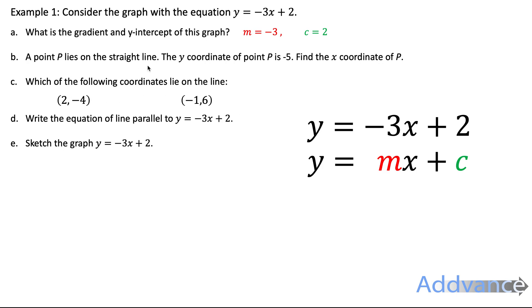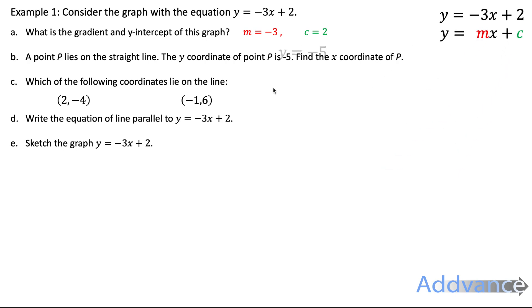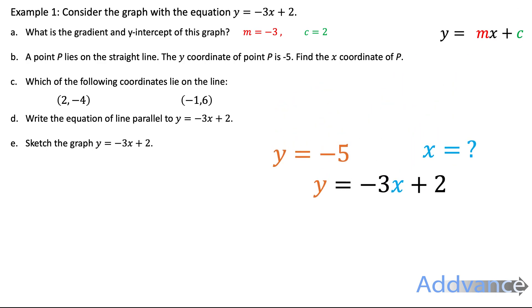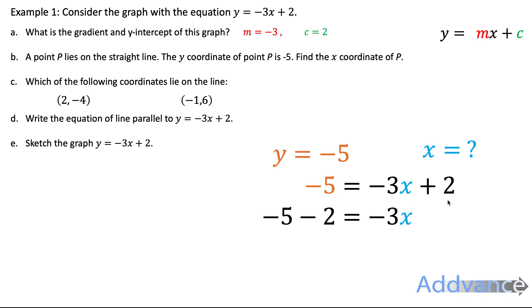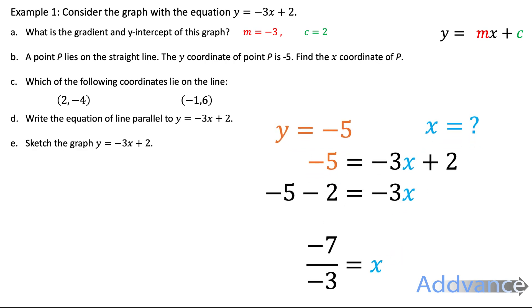A point P lies on the straight line; the y-coordinate of P is minus 5 — find the x-coordinate. We know y is minus 5, so we substitute that into the equation of the line and rearrange. Minus 5 equals minus 3x plus 2; move the 2 across to get minus 7 equals minus 3x, then divide both sides by minus 3 to get x equals 7 thirds.